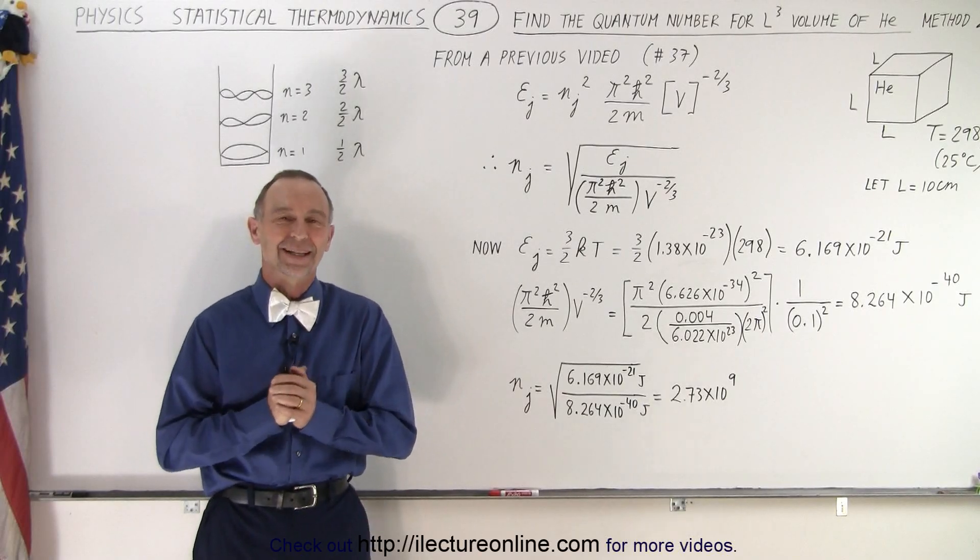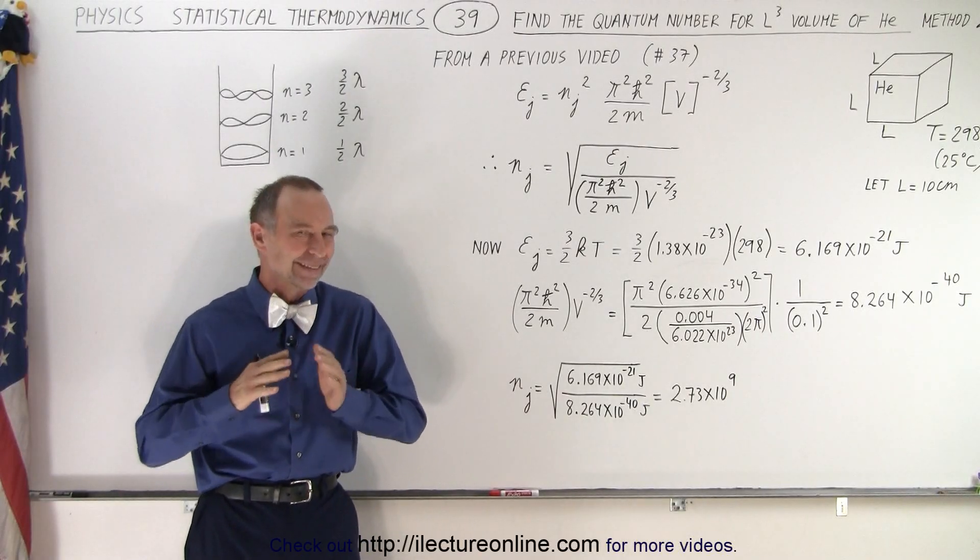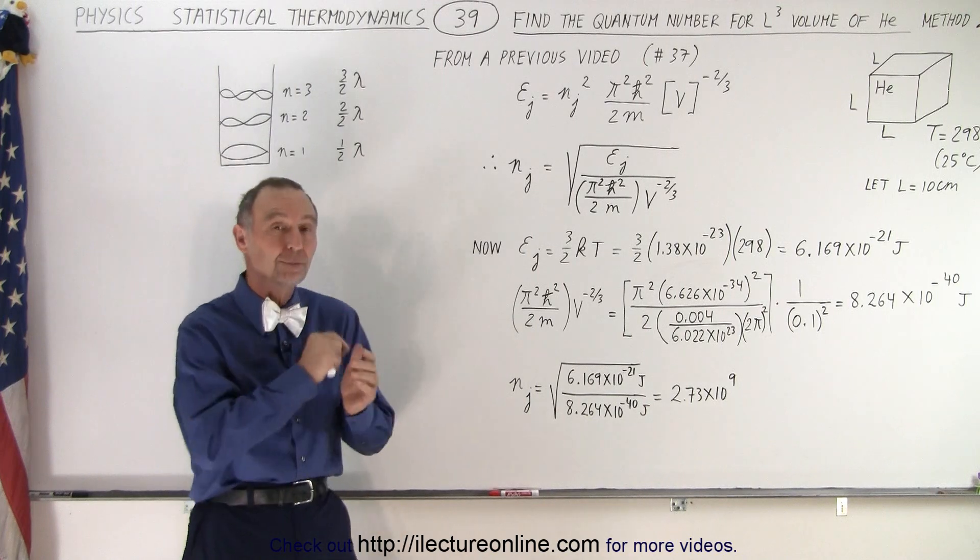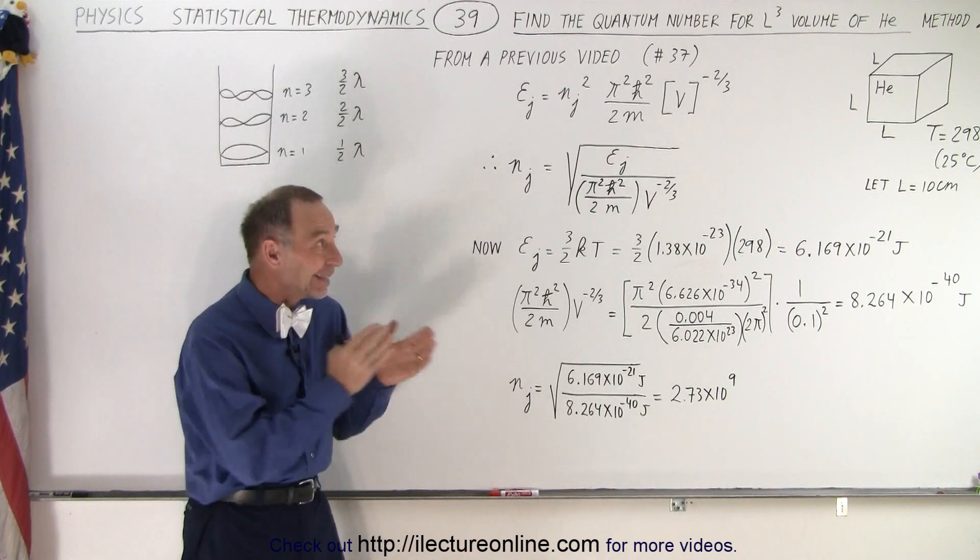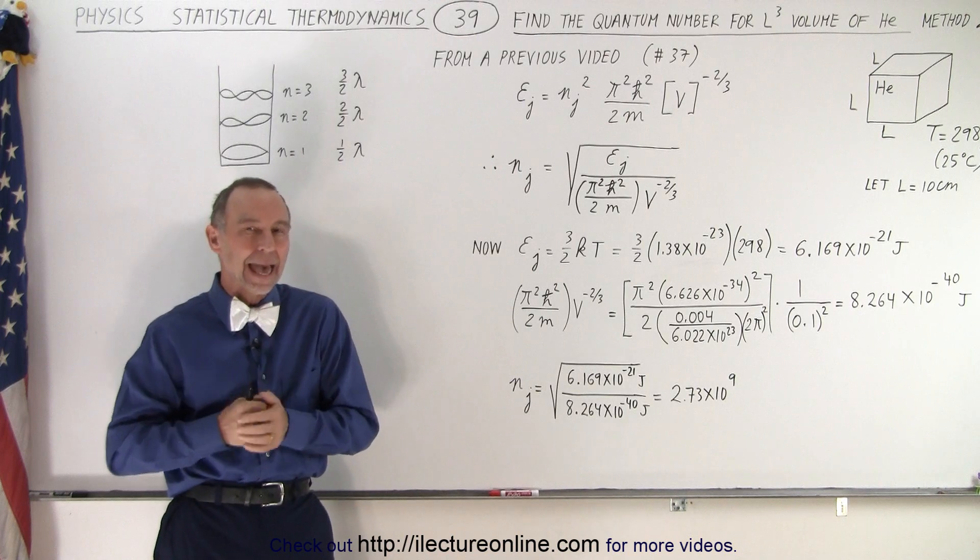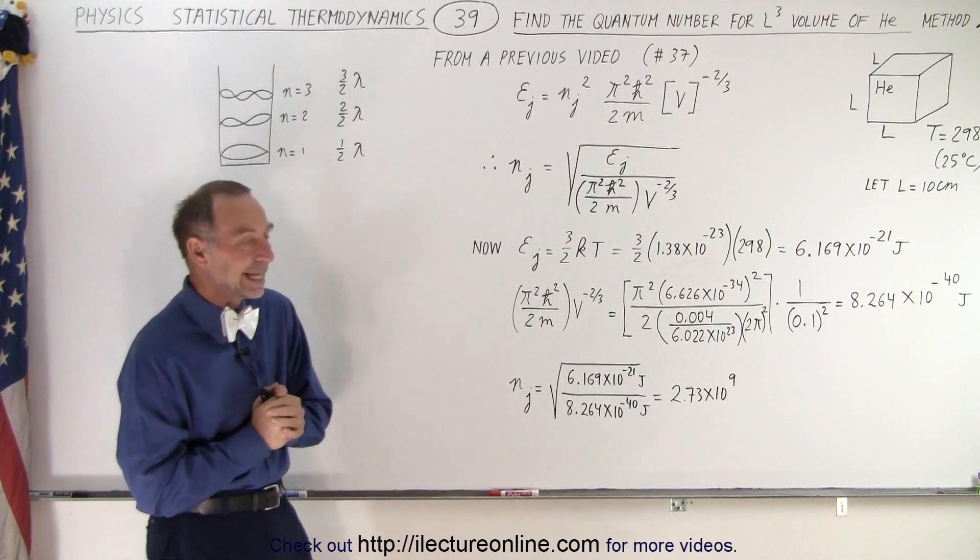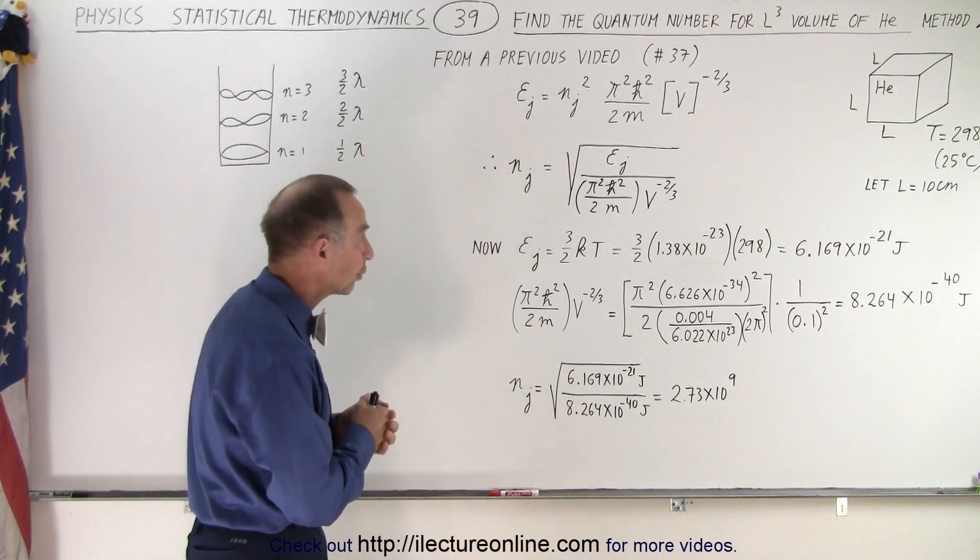Welcome to iLectroOnline. Now let's take another look at the same problem. We're trying to find the quantum number of a helium atom inside a box, 10 cm on each side, at room temperature, 298 Kelvin or 25 degrees Celsius.